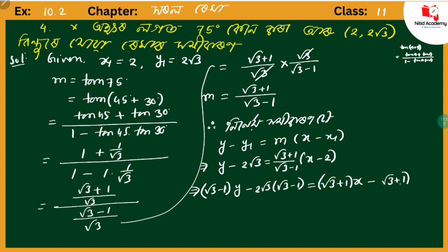On the left side: √3·y - √3·2√3 - 1·y + 1·2√3. On the right side: √3·x - √3·2 + 1·x - 1·2. We'll simplify each term.